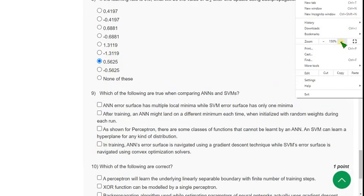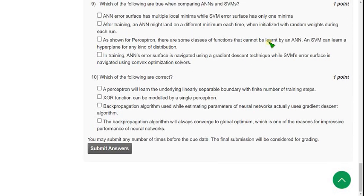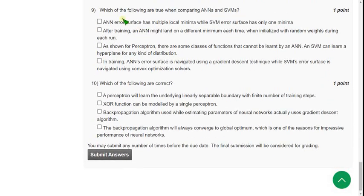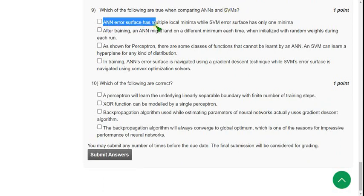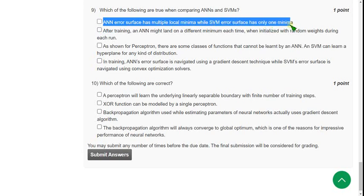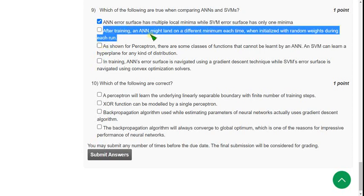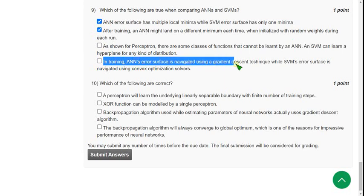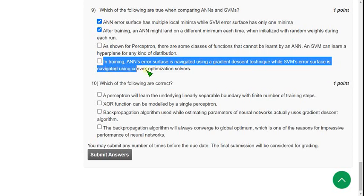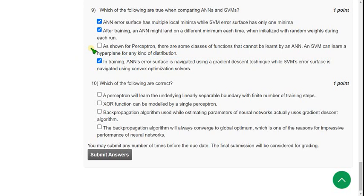Moving on to the ninth question, which of the following are true when comparing ANNs and SVMs? I have got three options. First: ANN error surface has multiple local minima while SVM error surface has only one minima. Second: After training, ANN might land on different minimum each time when initialized with random weights during each run. And fourth: In training, ANN's error surface is navigated using a gradient descent technique while SVM's error surface is navigated using convex optimization solvers.